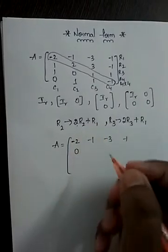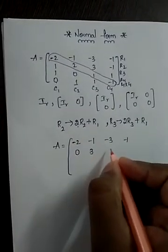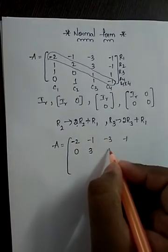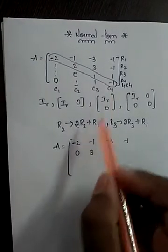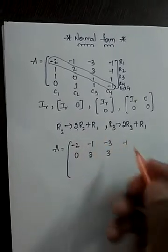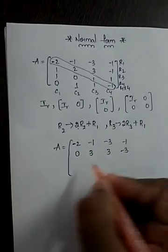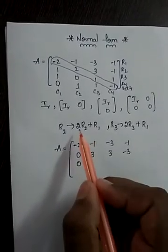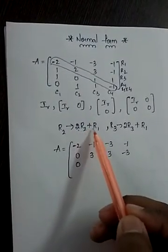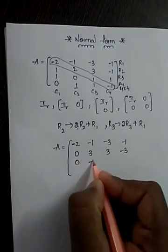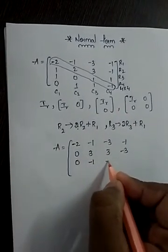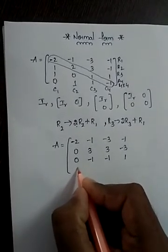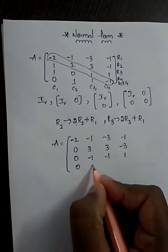Here 2 into R3 gives minus three; next minus two minus one is minus three; next it is zero. Here 2 into zero gives zero, minus one is minus one. Next one minus one is minus one, then one. Row four has no conditions, it remains the same.